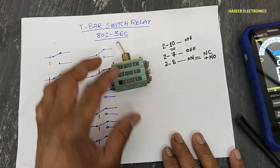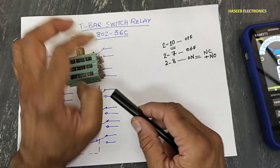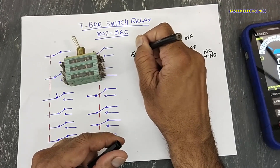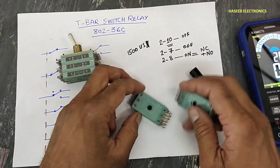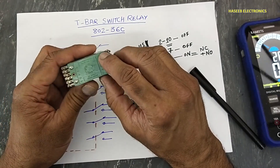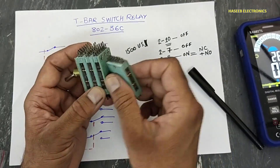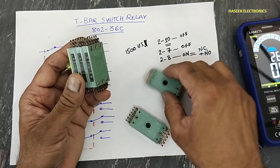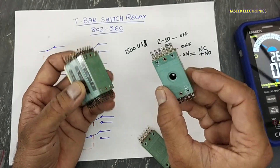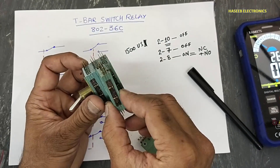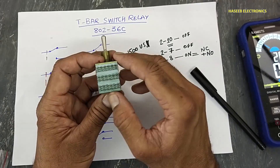First, we can replace the complete switch, but its price is approximately 1,500 US dollars, which is very high. If we have spare contact sets, we can remove these four screws — every section is separate — and just remove that stage and install a new one in its place. This is the second solution.